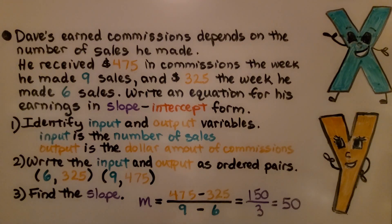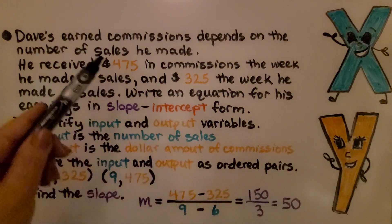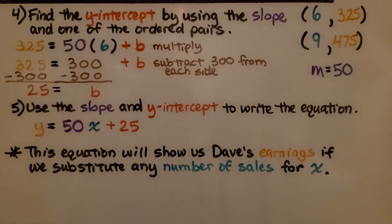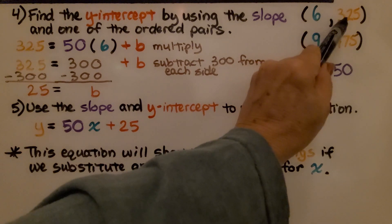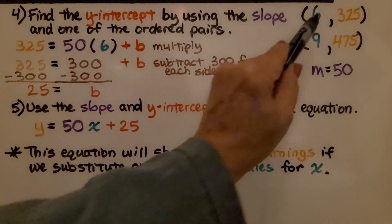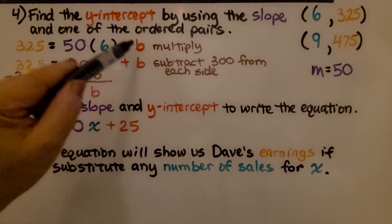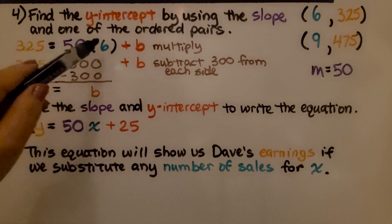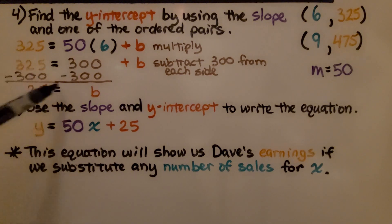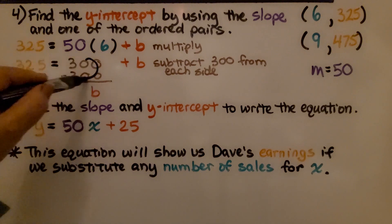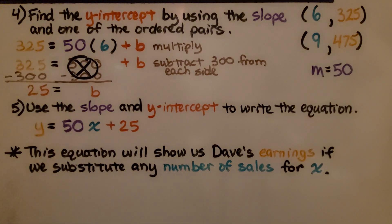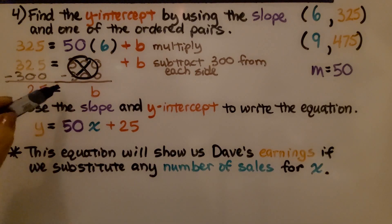Since the slope is 50, that tells us Dave gets $50 for each sale. We find the y-intercept using the slope and one ordered pair. We set y = 325, x = 6, and slope = 50, plus b. We multiply 50 times 6 and get 300. We subtract 300 from each side — 325 minus 300 is 25 — so 25 = b.